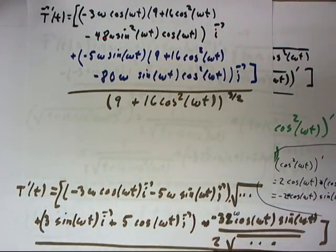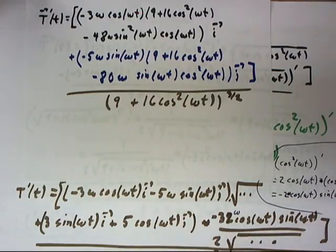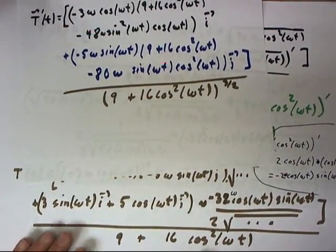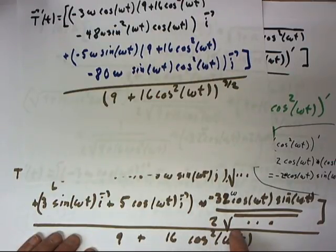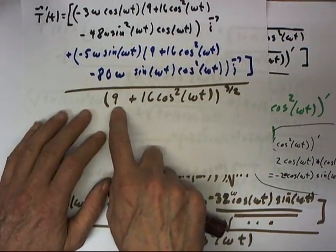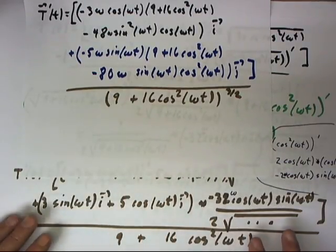Dividing the negative 32 by 2, I get negative 16, which will then distribute through this, and the denominator otherwise disappears. But, of course, I have to multiply the denominator of my original fraction by the square root of 9 plus 16 cosine squared of omega t, which is going to make my denominator the 3 halves power of 9 plus 16 cosine squared of omega t.